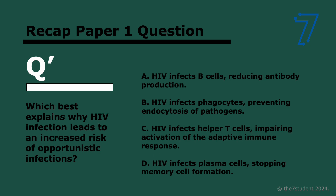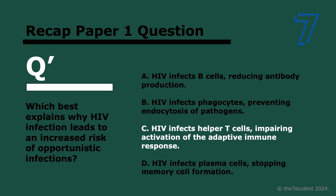Which best explains why HIV infection leads to an increased risk of opportunistic infections? Recall: HIV infects helper T cells, which then cannot activate B cells, so antibodies are not produced. HIV doesn't infect any of the other cells. So that's a wrap.